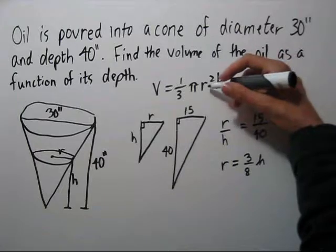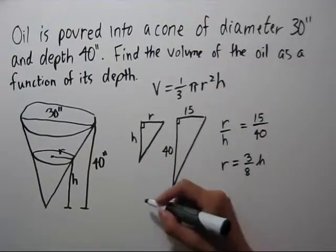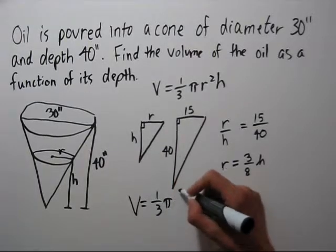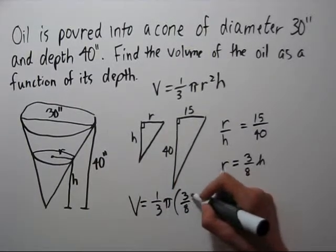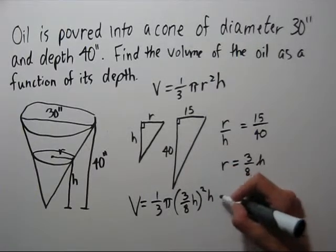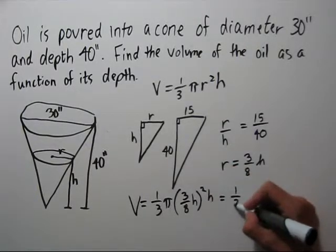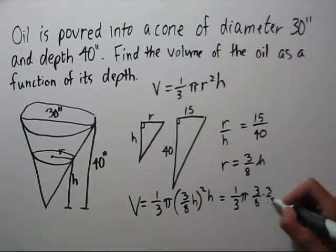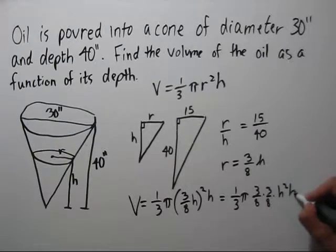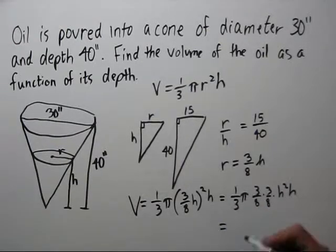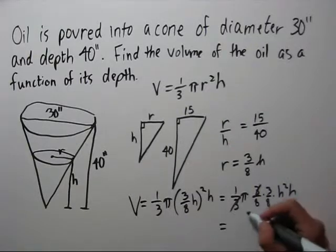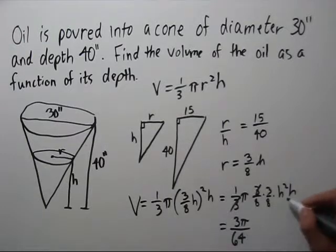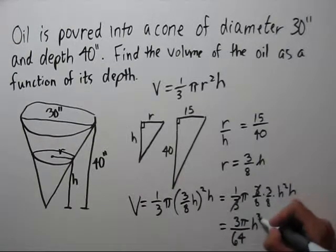Now we can put that r into our formula for the volume. We have one third pi times 3 eighths h squared times h, which is one third pi times 3 eighths times 3 eighths times h squared times h. Okay, the threes cancel. So we're left with the constant term of 3 pi over 64, and h squared times h is h cubed.